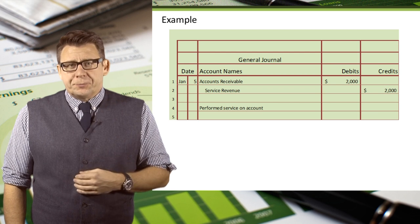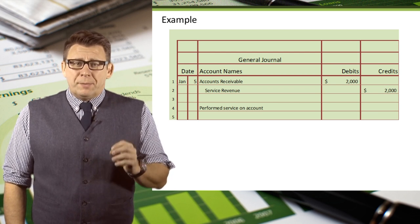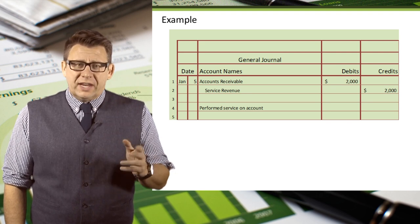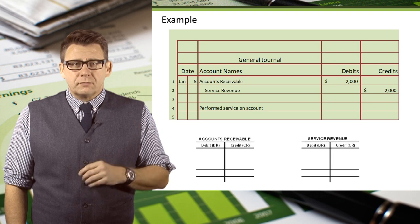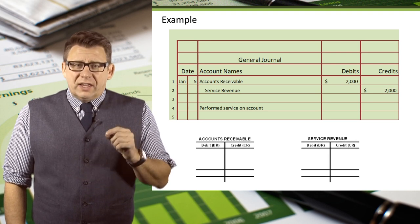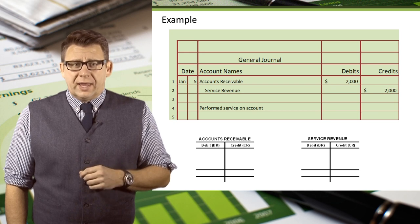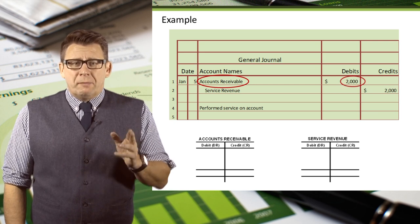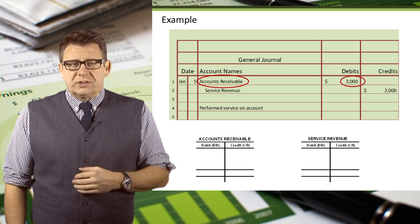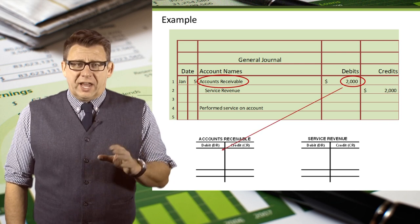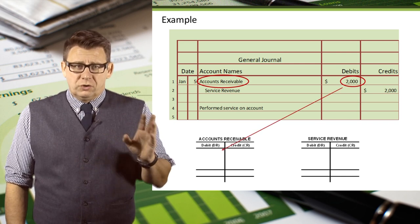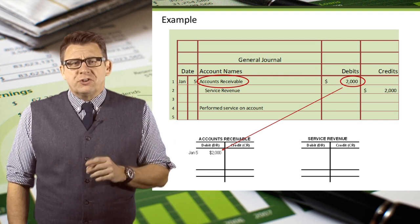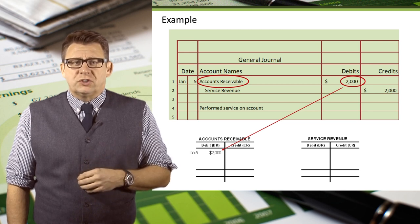Let's look at this example. We have a journal entry where we've debited accounts receivable for $2,000 and credited sales revenue for $2,000. The date is January 5th. In the ledger, we will need to find the accounts receivable account and the sales revenue account. Then identify the debit account, which is accounts receivable, and the amount of the debit — $2,000. So in the ledger for accounts receivable, we will post or record $2,000 to the debit side like this.